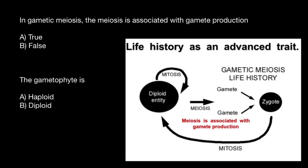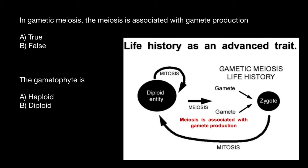Take a look at this picture. In this picture, we can see gametic meiosis as sexual reproduction. It is very easy to memorize because most animals use this sexual reproduction, and humans also use this sexual reproduction, which we call gametic meiosis.